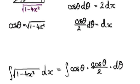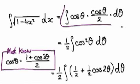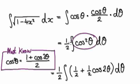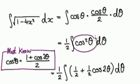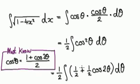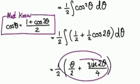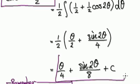Now tidy this up. After tidying, the integral becomes (1/2)∫cos²θ dθ. Remember, you must know by heart that cos²θ = (1 + cos 2θ)/2. Use this identity and substitute it in. Then integrate — it will give you (1/2)[θ/2 + sin 2θ/4] plus C. Tidy that up to get the result in terms of θ.